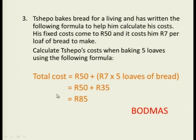Now this is the last sum I'm going to show you and I want you to pay careful attention because this is something that you will almost have a 100% chance of getting in your prelims and your finals and in some tests during the year. Tsepo makes bread for a living and has written the following formula to help him calculate his costs. His fixed costs come to R50 and it costs him R7 per loaf of bread to make. Calculate Tsepo's costs when baking 5 loaves using the following formula. Total cost equals R50 plus then a bracket R7 times 5 loaves of bread. Remember BODMAS. You never forget about BODMAS. Whether you're in grade 3 or in matric or at varsity you always use BODMAS. So BODMAS says brackets first. 7 times 5 is 35. Then you do addition and 50 plus 35 is 85 Rand. So his total cost for making the bread is R85.